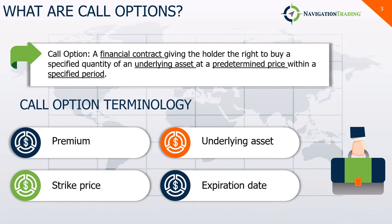So what are call options? For the situations we'll be looking at today, we'll be talking about buying a call option. You can also sell a call option based on certain factors, but buying a call option will be more straightforward for beginners. A call option is a contract that gives the holder the right to buy a specified quantity of an underlying asset at a predetermined price within a specified period. The buyer of an options contract pays a premium for that right.